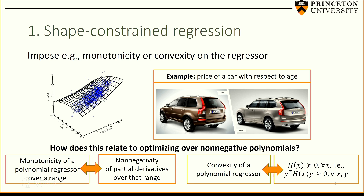How does this connect back to optimizing over non-negative polynomials? We want to fit a polynomial regressor to our data, and the derivatives of this polynomial are polynomials again. Imposing monotonicity of our polynomial regressor over a range is the same as imposing non-negativity of its partial derivatives over that range. Similarly, imposing convexity is the same as imposing that the Hessian of the polynomial be positive semi-definite, which is equivalent to asking that y^T H(x) y is non-negative for any x and y — a polynomial non-negativity condition.